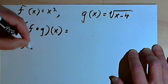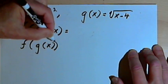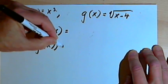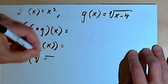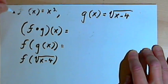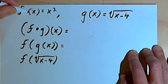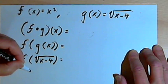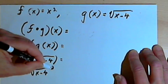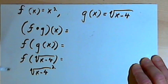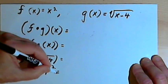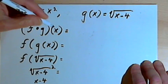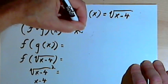We're going to rewrite it as f of g of x, which lets us replace g of x with what g of x equals — the square root of x minus 4. So now I've got f of the square root of x minus 4. Our f function says f of x equals x squared, so f of the square root of x minus 4 equals the square root of x minus 4, squared. Whenever we square a square root, we get whatever was underneath the radical sign, so this just equals x minus 4. So f compose g of x equals x minus 4.